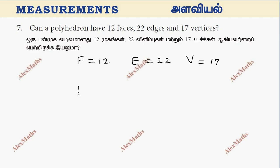Using Euler's formula, F plus V minus E should equal 2 if the polyhedron is possible. So 12 plus 17 minus 22. We substitute F, V, and E values into the formula.